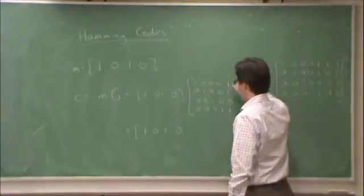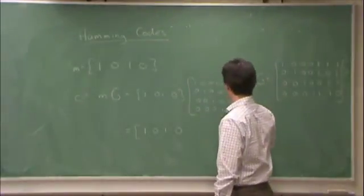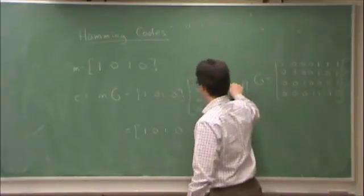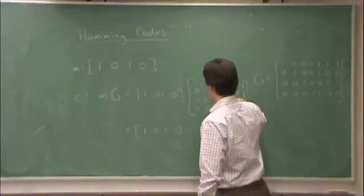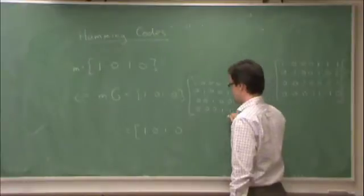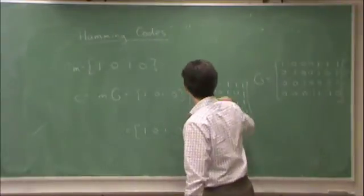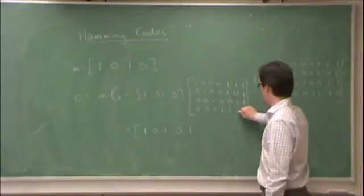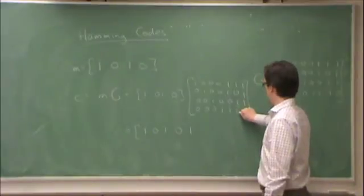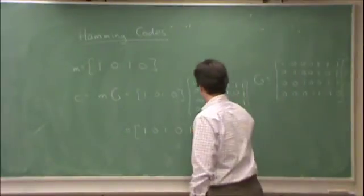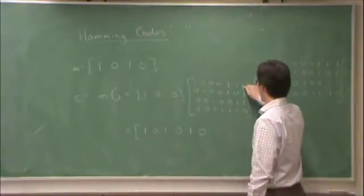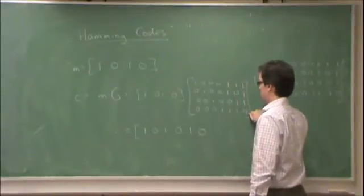Of course, this bit will be 1 0 0 0, which is 1; 1 0 1 0, which is 0; and 1 0 1 0, which is 0.